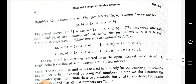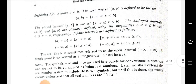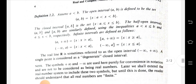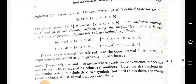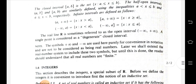The real line R is sometimes referred to as the open interval (−∞, +∞). The symbols plus infinity and minus infinity are used here purely for convenience in notation and are not to be considered as real numbers. Later we shall extend the real number system to include these two symbols.